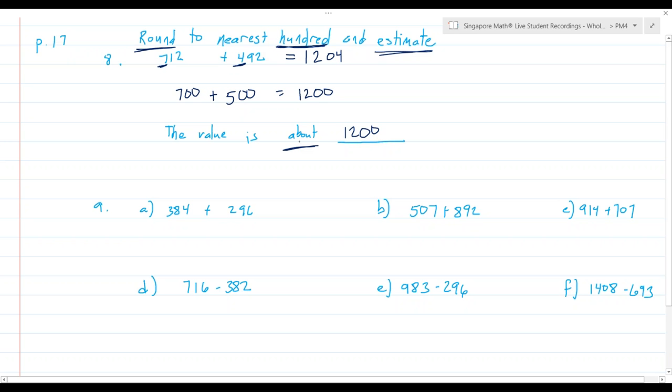Now the word about is important. The value is exactly 1204, but the value is about 1200. Please notice we don't find the answer and then round the answer. We're going to round each value and then add them together.